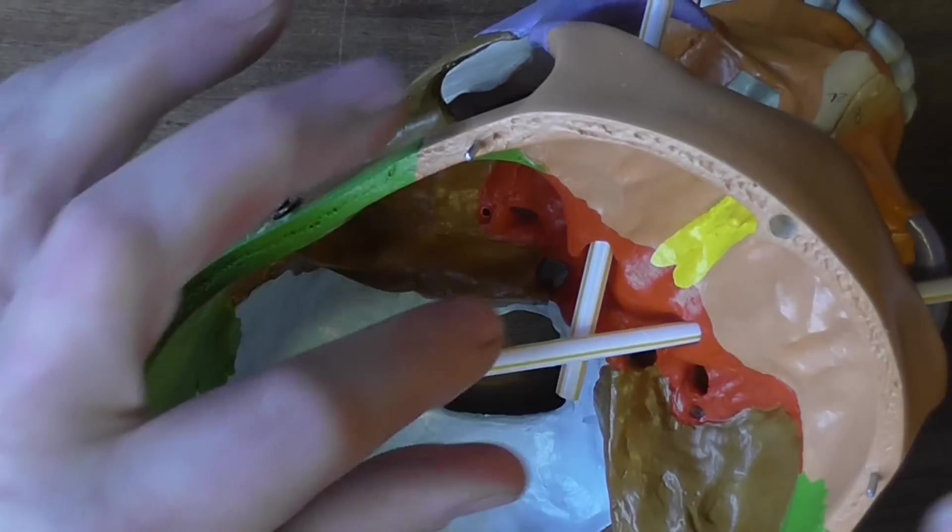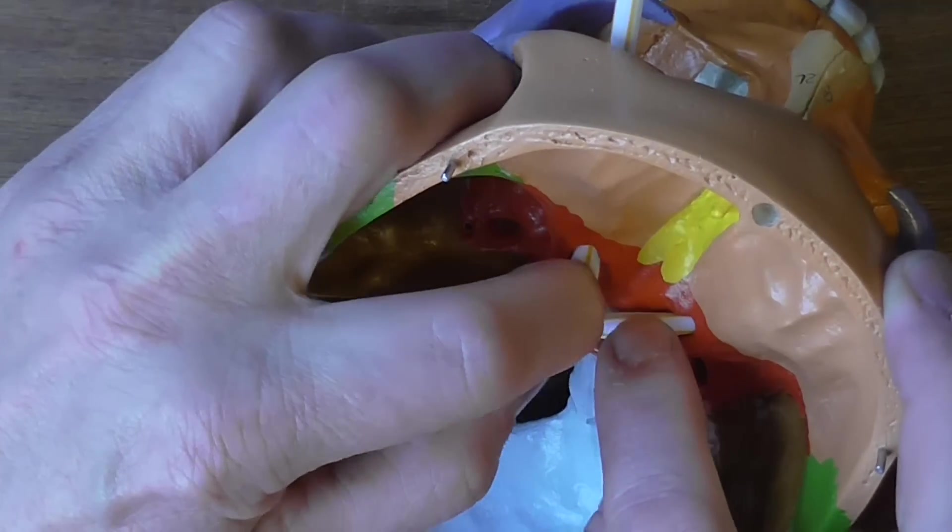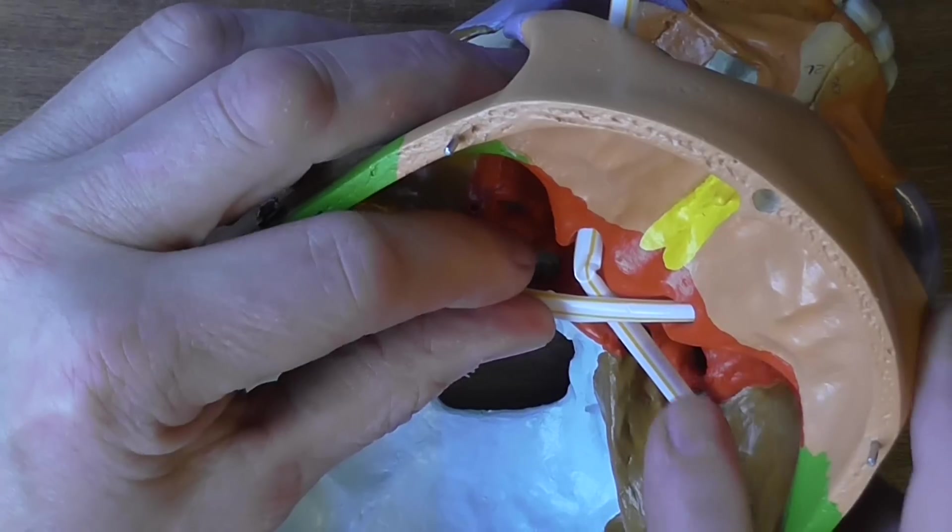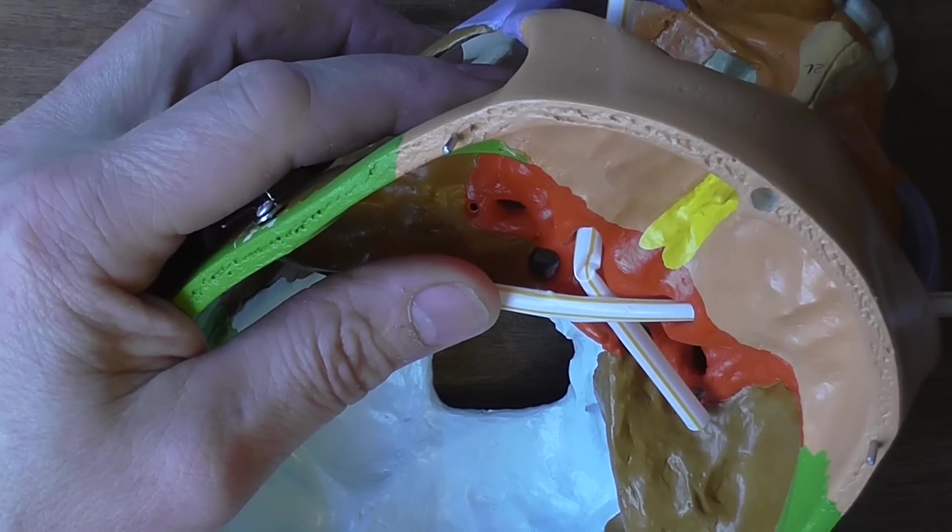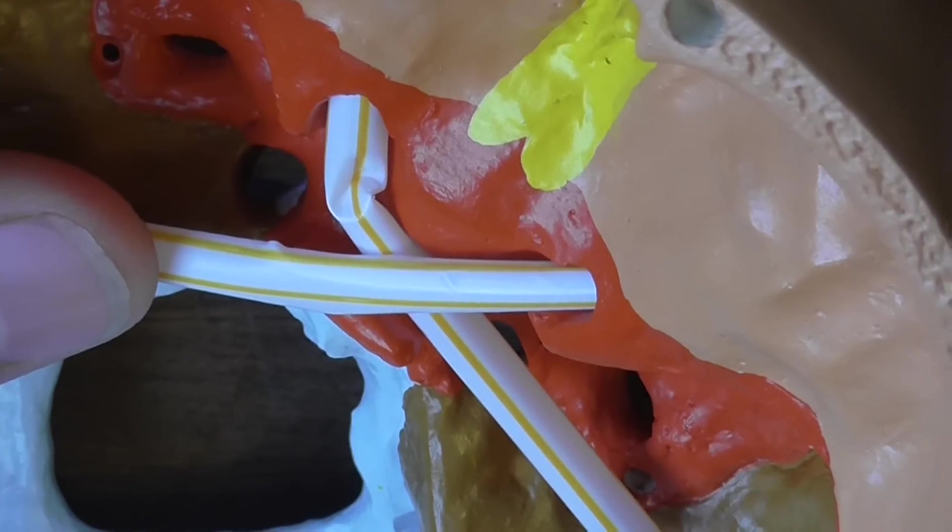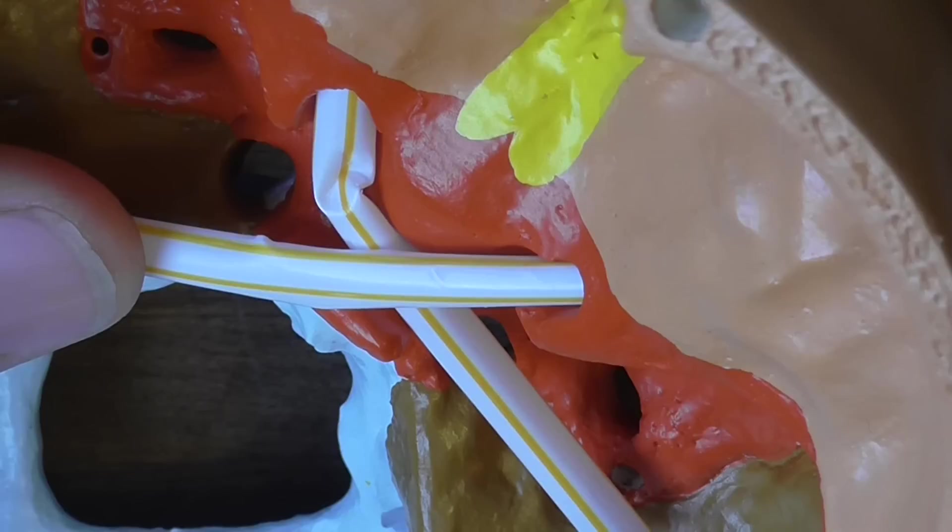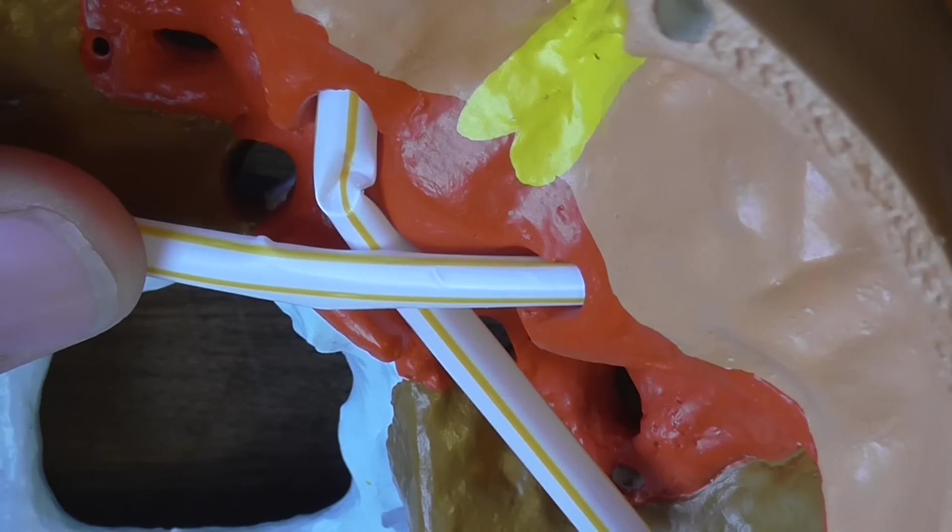And actually what happens is some of the nerve fibers cross over just behind here in that position there. That is called the optic chiasma. Some of the nerve fibers cross over, some don't. We'll do a separate diagram of that.